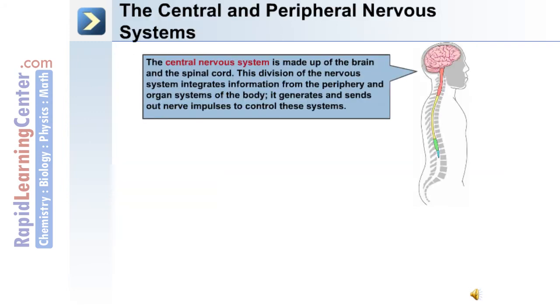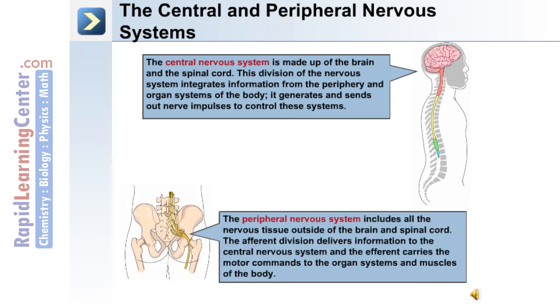The central nervous system, made up of the brain and spinal cord, integrates the information it receives from the periphery and organ systems of the body. It generates and sends out nerve impulses to control these systems.